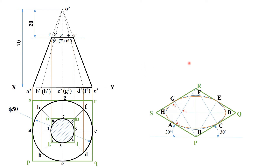Now proceed to the top sectional circle. Draw a line along the midpoint axis. The height of this axis equals the difference between the total height and the distance from the apex to the section plane — that is 70 minus 20 = 50 mm. So the height of this axis line for the frustum portion in the isometric view will be 50 mm.